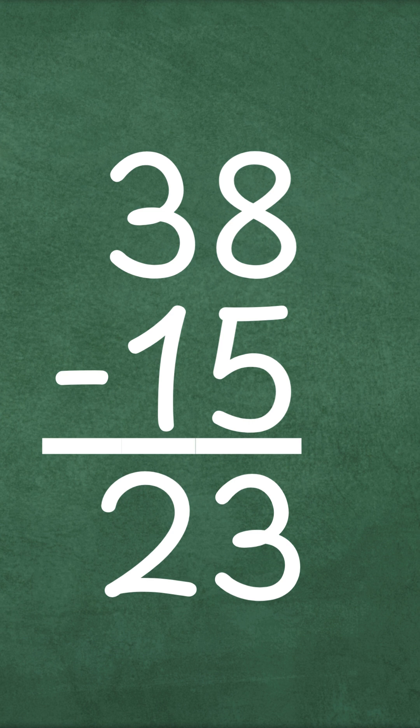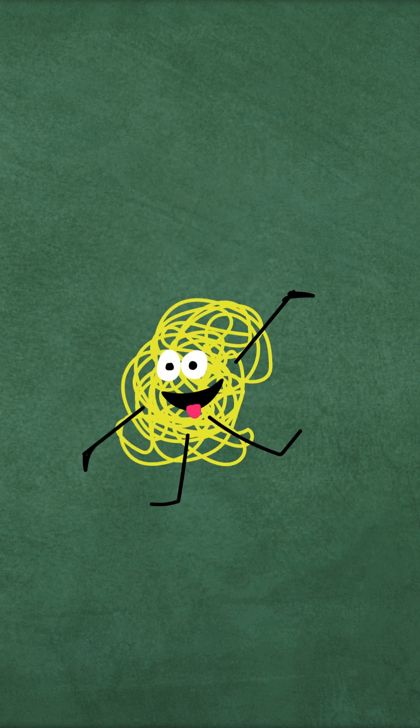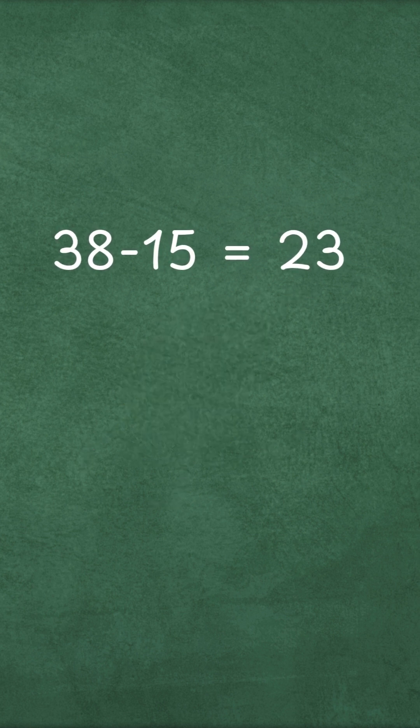So now we know that 38 cookies minus 15 cookies equals 23 cookies. You'll have 23 cookies left after you share with your friends. And do you know what? Because we did all that hard work, we also know that 38 minus 15 is always 23. Even if you're not counting cookies.